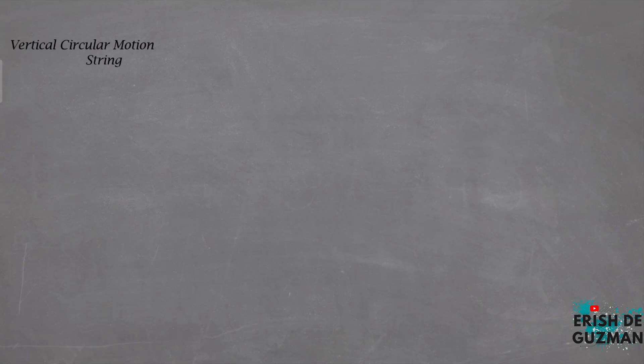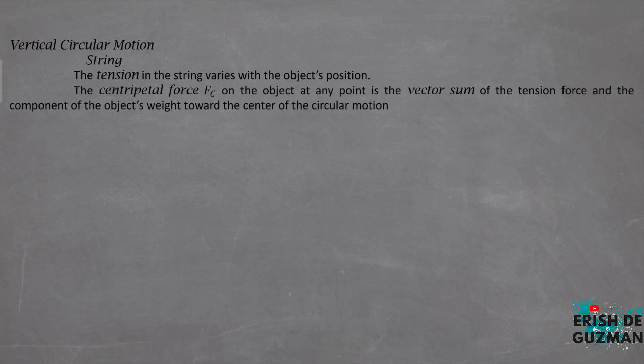When a body moves in a vertical circular motion — for example, an object attached to a string — the tension in the string varies with the object's position; the value of tension changes. The centripetal force on the object at any point is the vector sum of the tension force and the component of the object's weight toward the center of the circular motion.